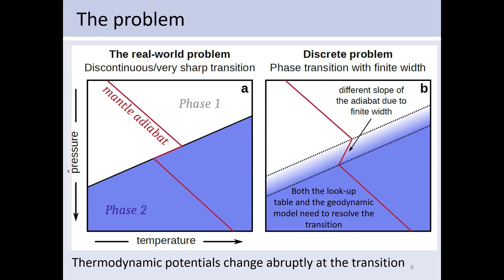Let me go into more detail about what exactly the problem is. If we think about a very thin phase transition in pressure-temperature space: while we are in the lower-pressure phase, the mantle adiabat follows a given slope, and once it hits the phase transition it abruptly changes its slope as material converts from phase one to phase two. Once all the material is converted, the adiabat continues at a new slope deeper into the mantle.